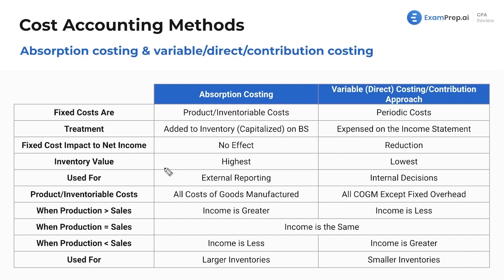Now let's think about the effect on net income. Under absorption costing, there's no effect to net income because the fixed cost gets capitalized and goes to the balance sheet, which doesn't affect net income. However, under the variable or direct method, these fixed costs are an expense, and expenses reduce net income. Makes sense.